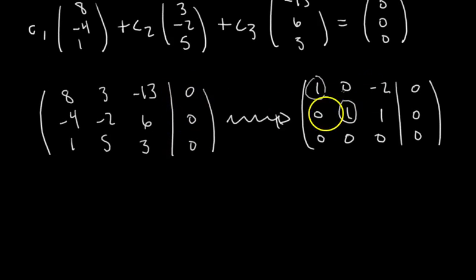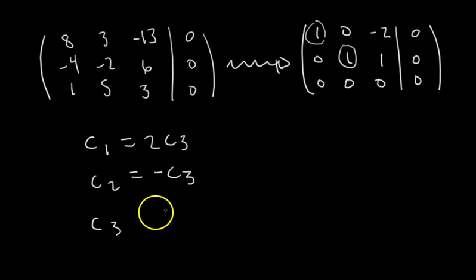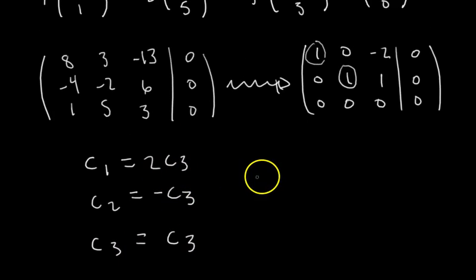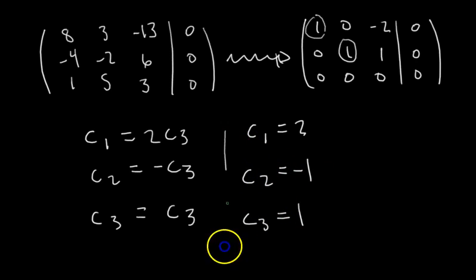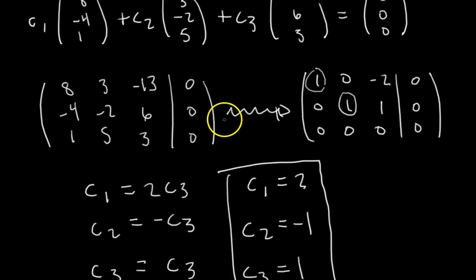Let's actually find those scalars. From the row-reduced matrix: C1 minus 2·C3 equals 0, so C1 equals 2·C3. From the second row: C2 equals negative C3. We parametrize our solution set by the free variable. Let's pick C3 equals 1 — we don't want to pick 0, since that gives us only the trivial solution. So C3 equals 1 gives C1 equals 2, C2 equals negative 1.